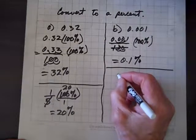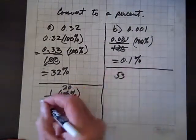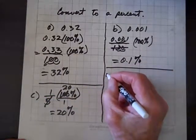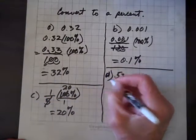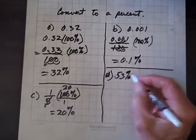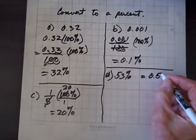So, what if we have something like 53%? So, I guess we did a C here, and we're going to do a D here. 53%. Well, we just have to move the decimal the other way, and that equals 0.53.